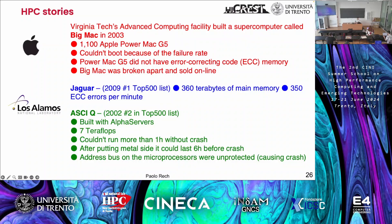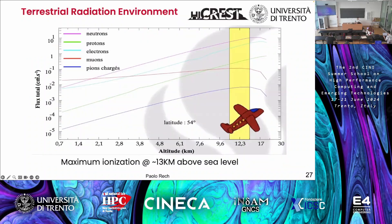Los Alamos had notable reliability problems: Jaguar was the top system on the Top500 list with 350 ECC errors per minute, and ASCI Q couldn't run for more than one hour without crashing. Los Alamos is particularly interested in radiation because the flux of neutrons increases exponentially with altitude. The scale is logarithmic, so the increase is exponential — in Los Alamos you can expect 8 to 10 times more errors than in Oak Ridge.